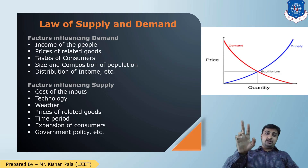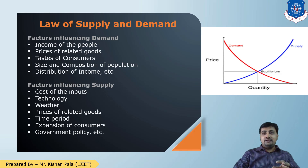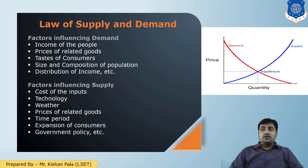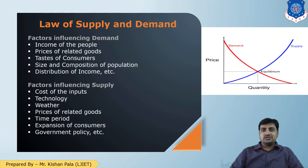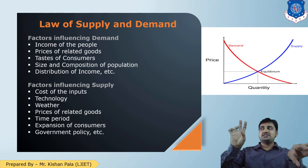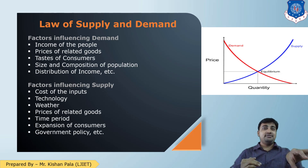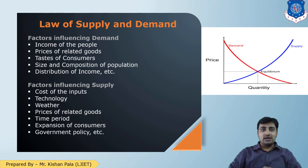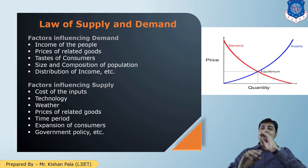The second factor is prices of related goods. For example, consider two cold drinks: Pepsi and Coca-Cola, both priced at 50 rupees for 250 ml. If Pepsi keeps its price fixed but Coca-Cola increases its price from 50 to 70 rupees, there may be chances of higher demand for Pepsi and decreasing demand for Coca-Cola. So prices of related goods directly affect demand.